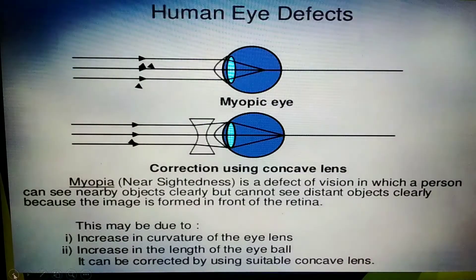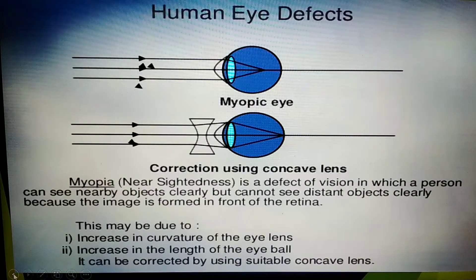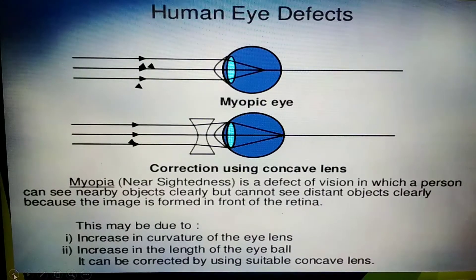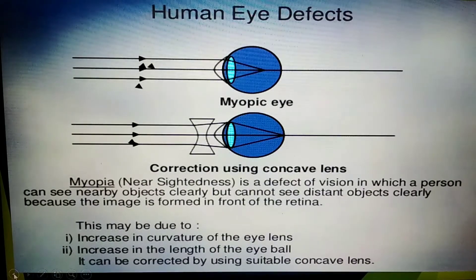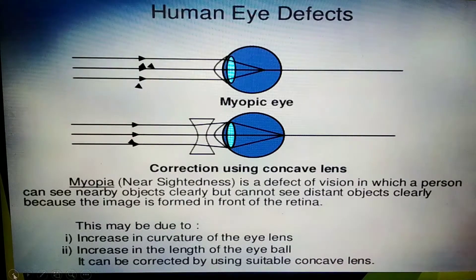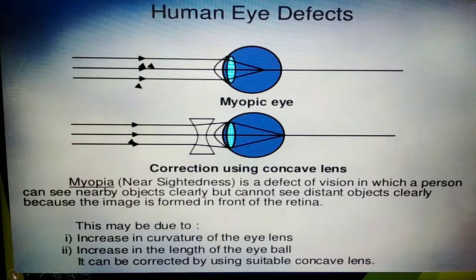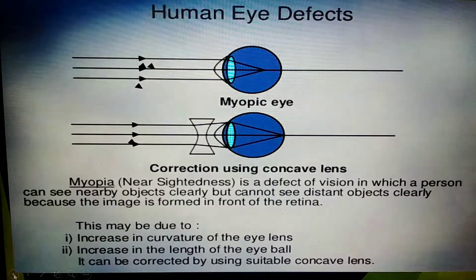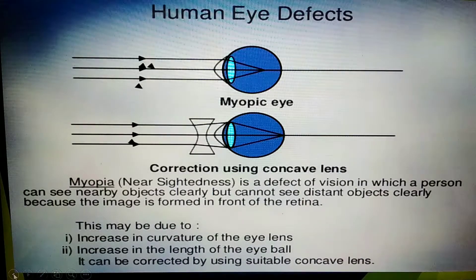Myopia is otherwise known as nearsightedness. In this defect of vision, a person can see nearby objects clearly but cannot see distant objects clearly because the image is formed in front of the retina. This may be due to an increase in the curvature of the eye lens and an increase in the length of the eyeball. It can be corrected by using a suitable concave lens.